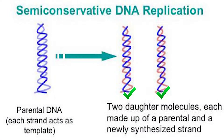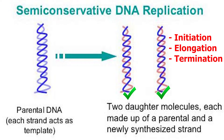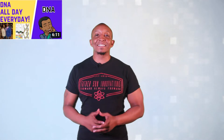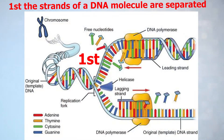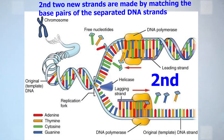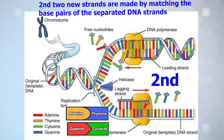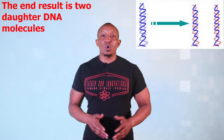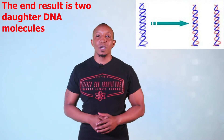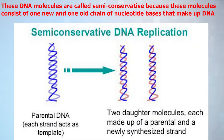So let's begin with DNA replication. During DNA replication, two semi-conservative DNA molecules are made during the processes of initiation, elongation, and termination. For more on these processes, check out our video link above. First, the strands of a DNA molecule are separated. Second, two new strands are synthesized by matching the base pairs of the separated DNA strands. Adenine pairs with thymine and cytosine pairs with guanine. The end result is two new daughter DNA molecules, called semi-conservative because they consist of one new and one old chain of nucleotide bases.